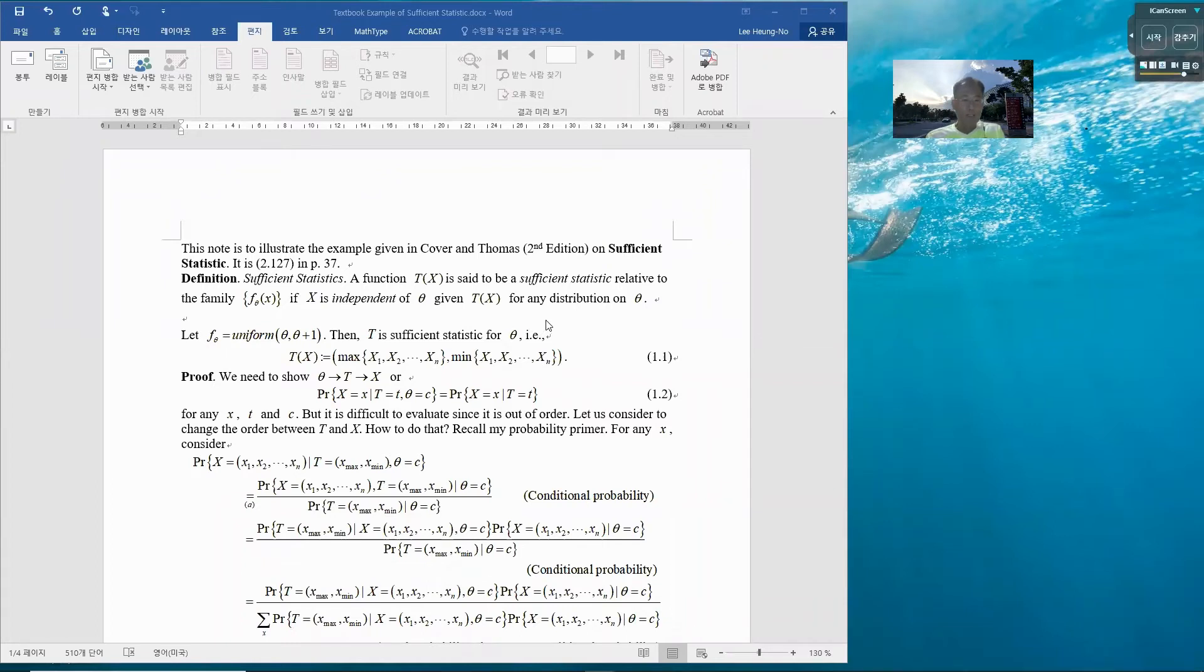I would like to revisit my note on sufficient statistics. This note was to illustrate the example given in Cover and Thomas. Last time I gave a wrong page number, so it has to be corrected to equation 2.127 in page 37 of Cover and Thomas second edition.